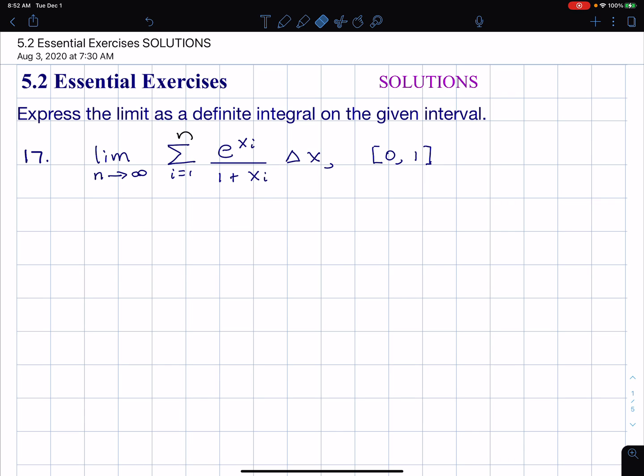Alright, here we go. We're going to do this essential exercise from 5.2. Express the limit as a definite integral on the given interval. So here we have a limit as n approaches infinity, summation i equals 1 to n, and then this function e to the xi over 1 plus xi, delta x, from 0 to 1.